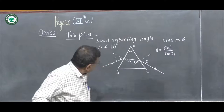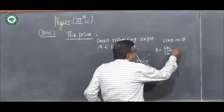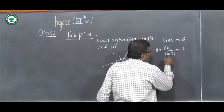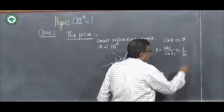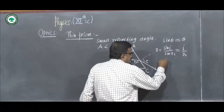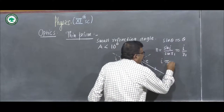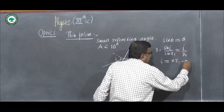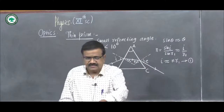And if these angles are small, sin i is nearly equal to i, and sin r1 is nearly equal to r1. Hence we write i = n·r1.